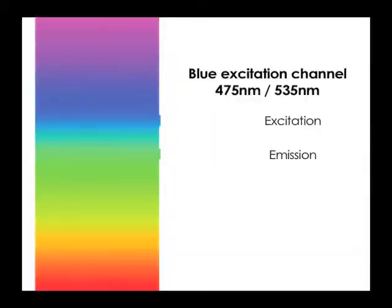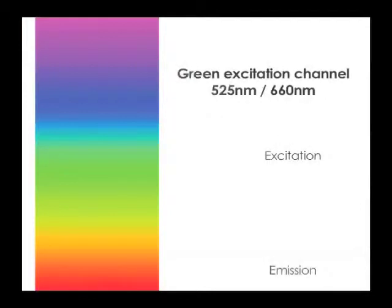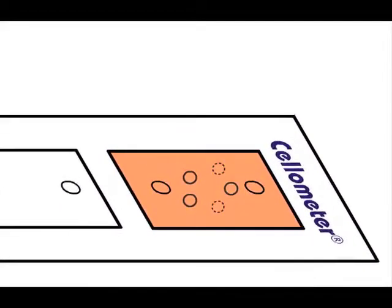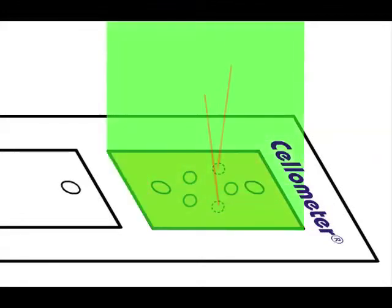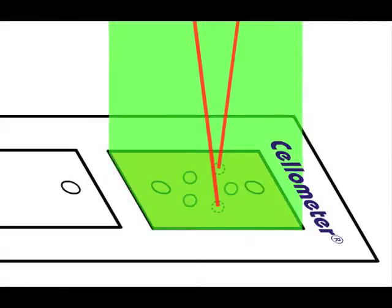The Cellometer Vision is configured with a blue excitation channel and a green excitation channel. Live nucleated cells emit green fluorescence when excited by blue light. Dead cells produce red fluorescence when excited by green light.